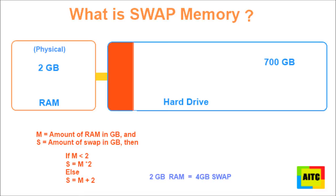While swap space can help machines with a small amount of RAM, it should not be considered a replacement for more RAM. The problem with using swap is that it's slower than normal RAM. Swap should normally be 2 times the amount of RAM you have. Creating a large swap space partition can be especially helpful if you plan to upgrade your RAM at a later time.